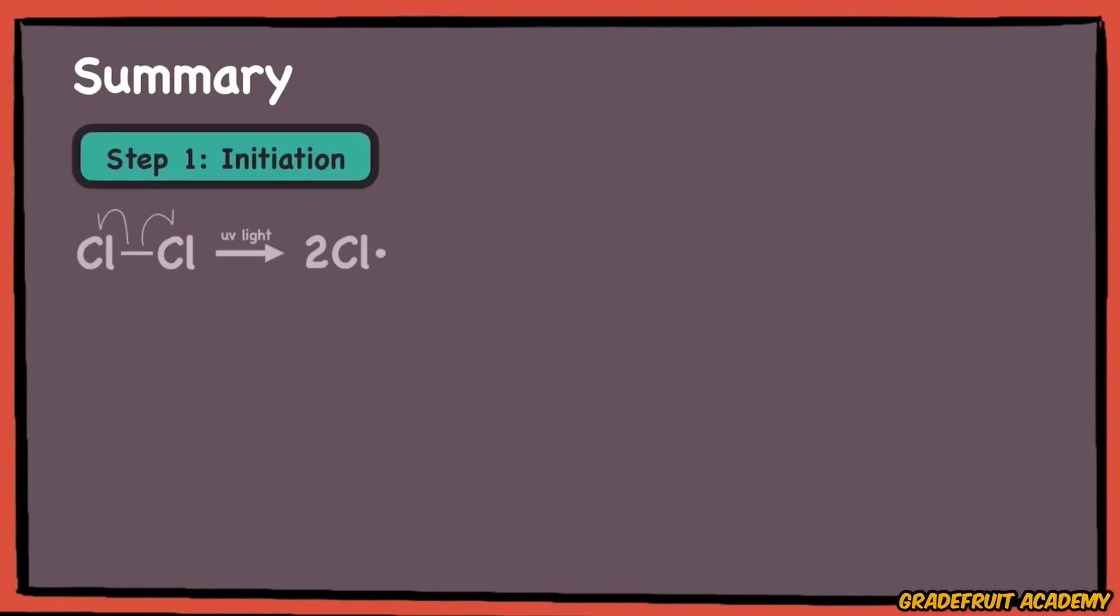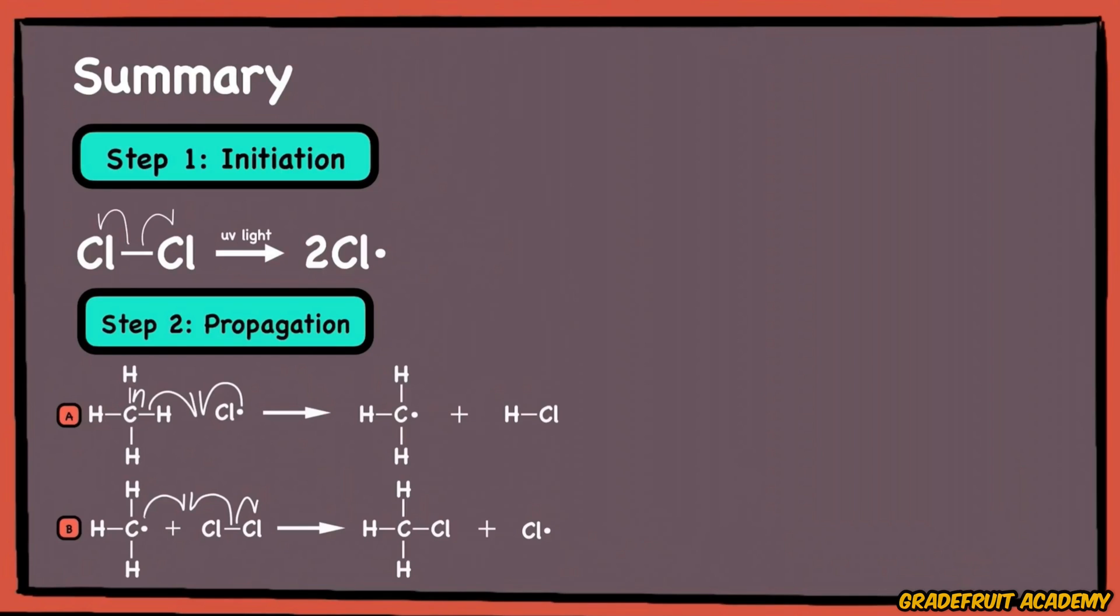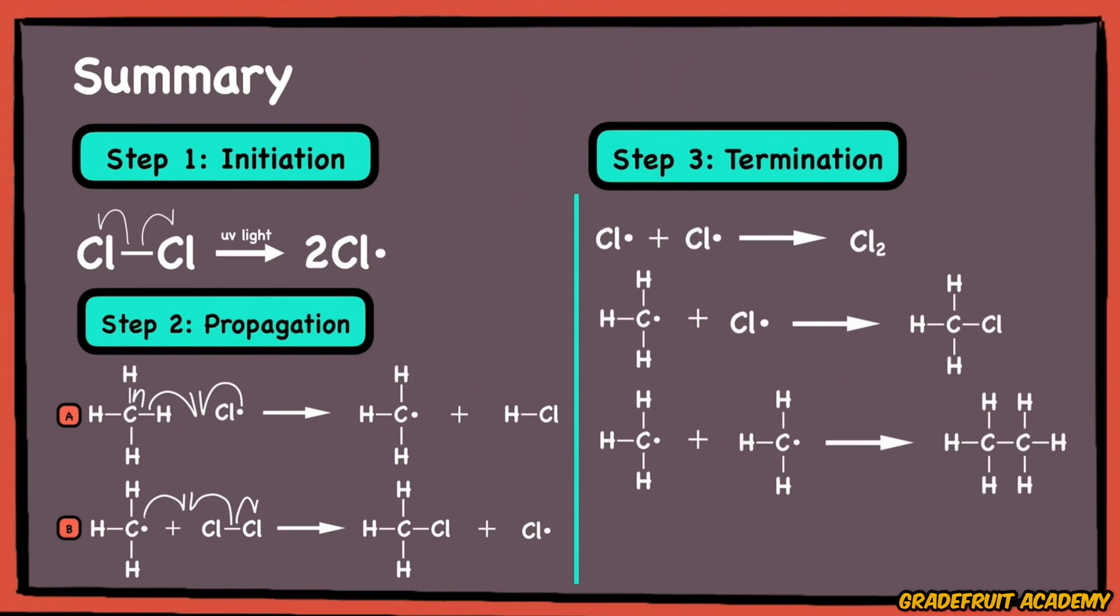To summarize, step one involves bond breaking of the Cl-Cl bond in the presence of UV light. Step two involves both bond breaking and bond formation, producing free radicals that continue the chain reaction. Step three involves the termination of the chain reaction by bond forming between any two radicals. I'll see you next time.